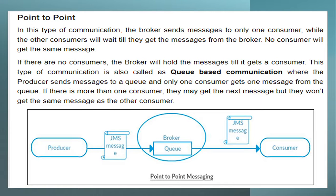Now, what is point-to-point messaging? In point-to-point messaging, the broker sends messages to only one consumer and one consumer consumes it. If the consumer is not consuming, it will wait until it gets the message from the broker — no consumer will get the same message. If there are no consumers, the broker will hold the message until it gets a consumer. This type of communication is also called queue-based communication, where the producer sends a message to a queue and only one consumer gets one message from the queue. If there is more than one consumer, they may get the next message but they won't get the same message as the other consumer.